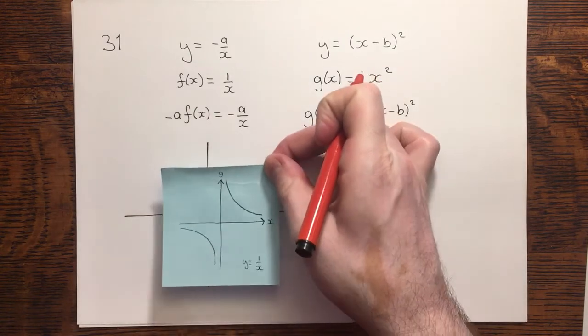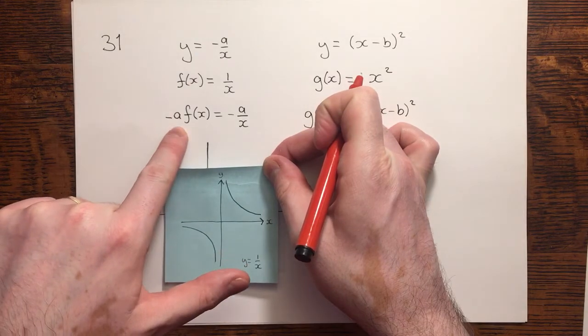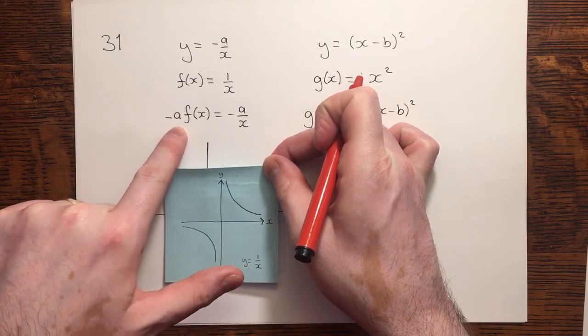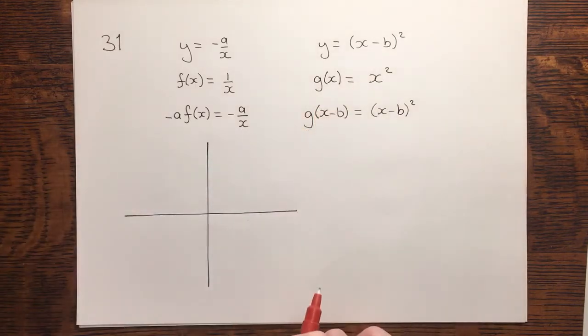1 over x looks like this. If I apply this transformation, it's going to affect the y values, causing a reflection in the x-axis.